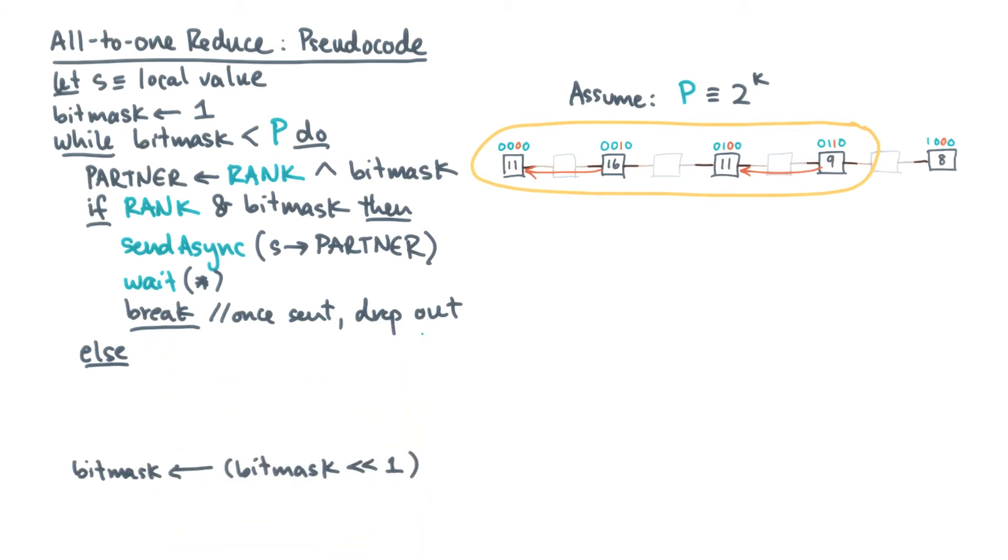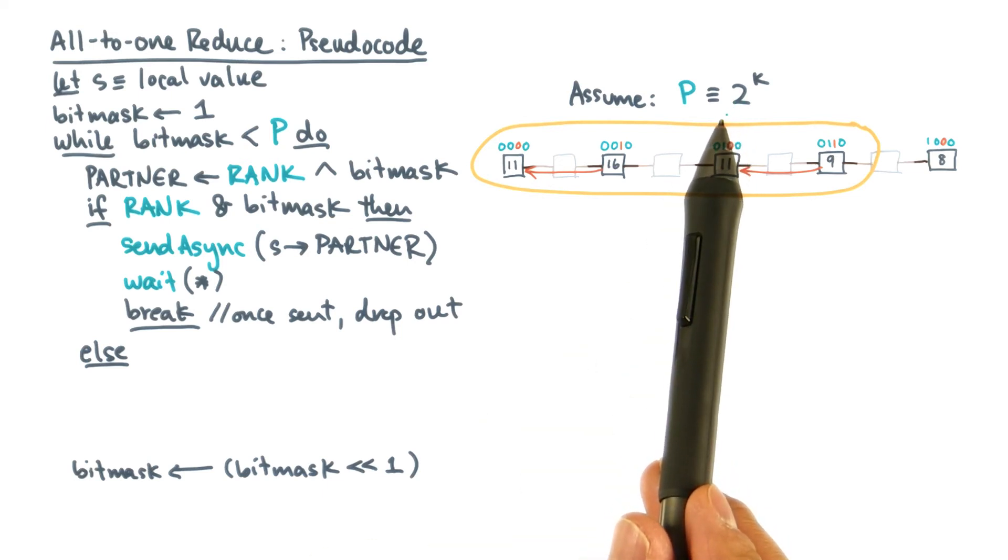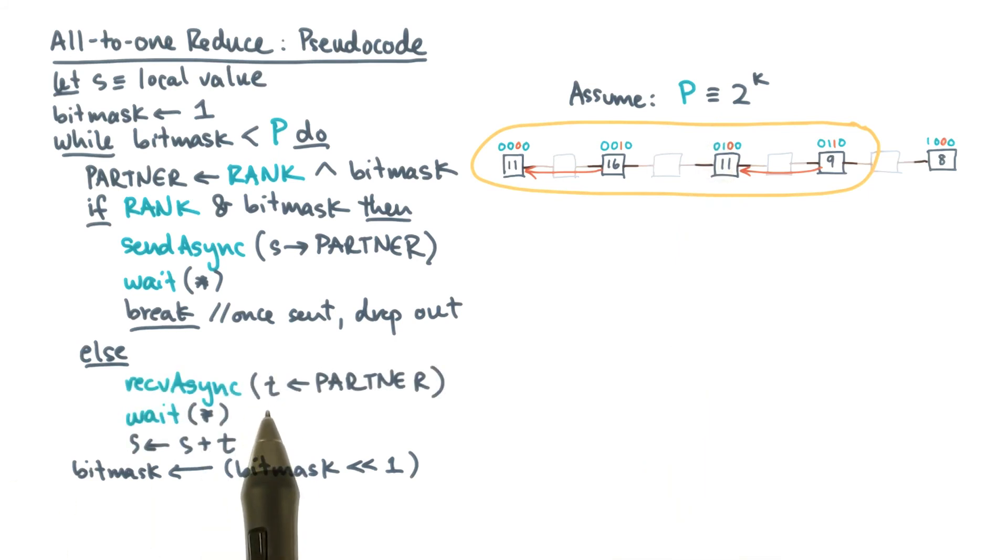Now if we're not a sender, then we might be a receiver. And if p is a power of two, it will turn out we must be a receiver. In that case, we'll receive the value from our partner and then accumulate it.